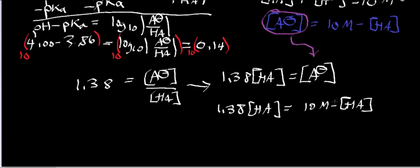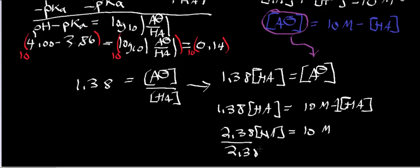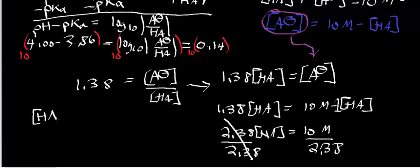The coefficient on [HA] on the right side is 1, so we add 1·[HA] to both sides, giving us 2.38 times [HA] equals 10 molar. Dividing both sides by 2.38, we get that the concentration of HA equals 10 molar divided by 2.38, which equals 4.20 molar.